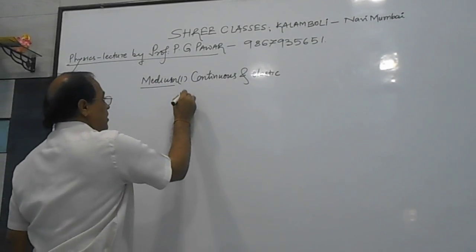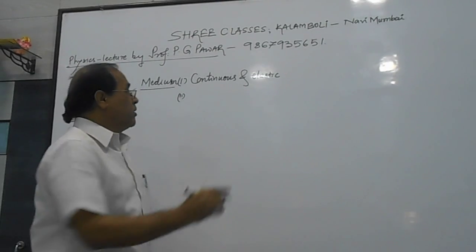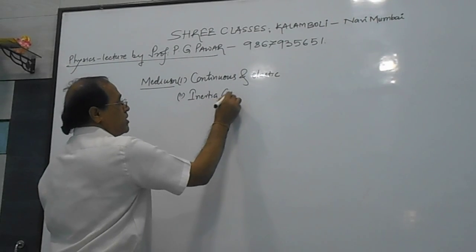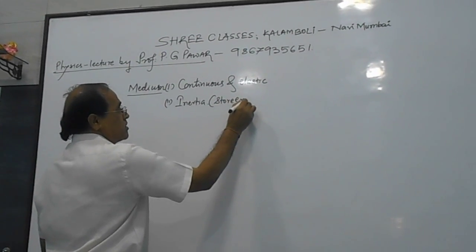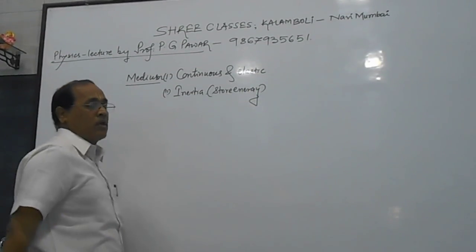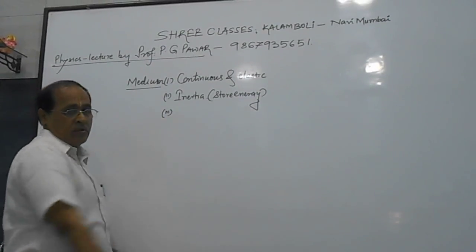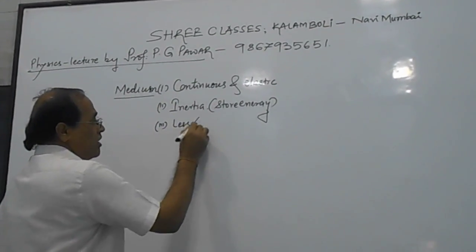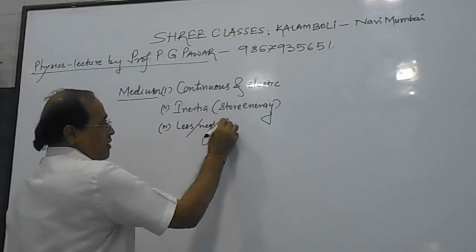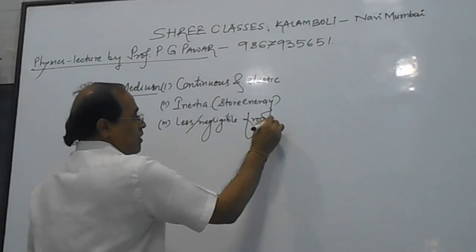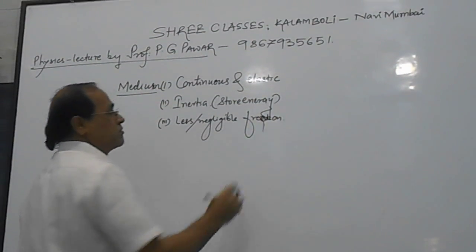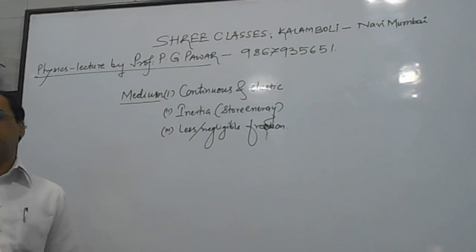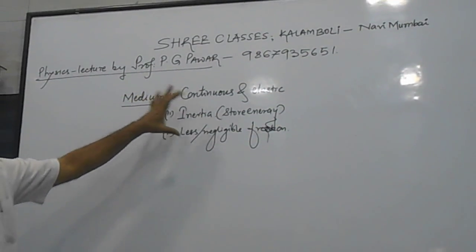Secondly, for the propagation of a wave, the medium must possess inertia — meaning the capacity to store energy. And the third requirement for the medium is that there must be less or negligible friction. If the friction is more, the wave will not travel.